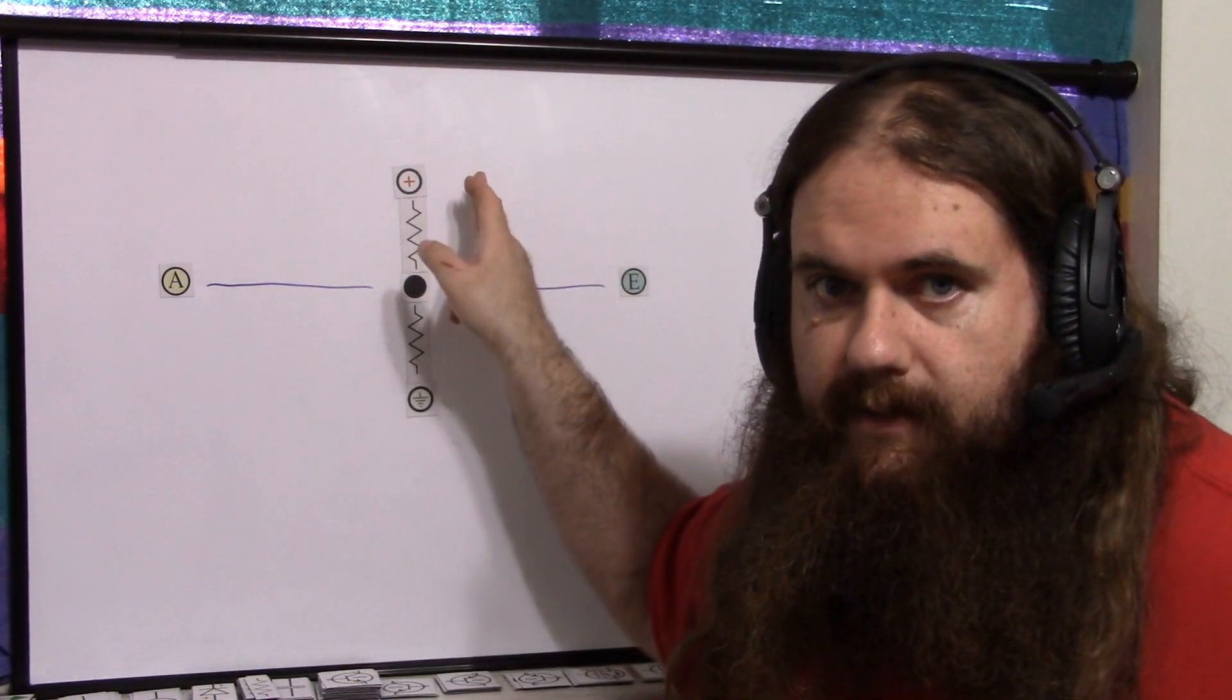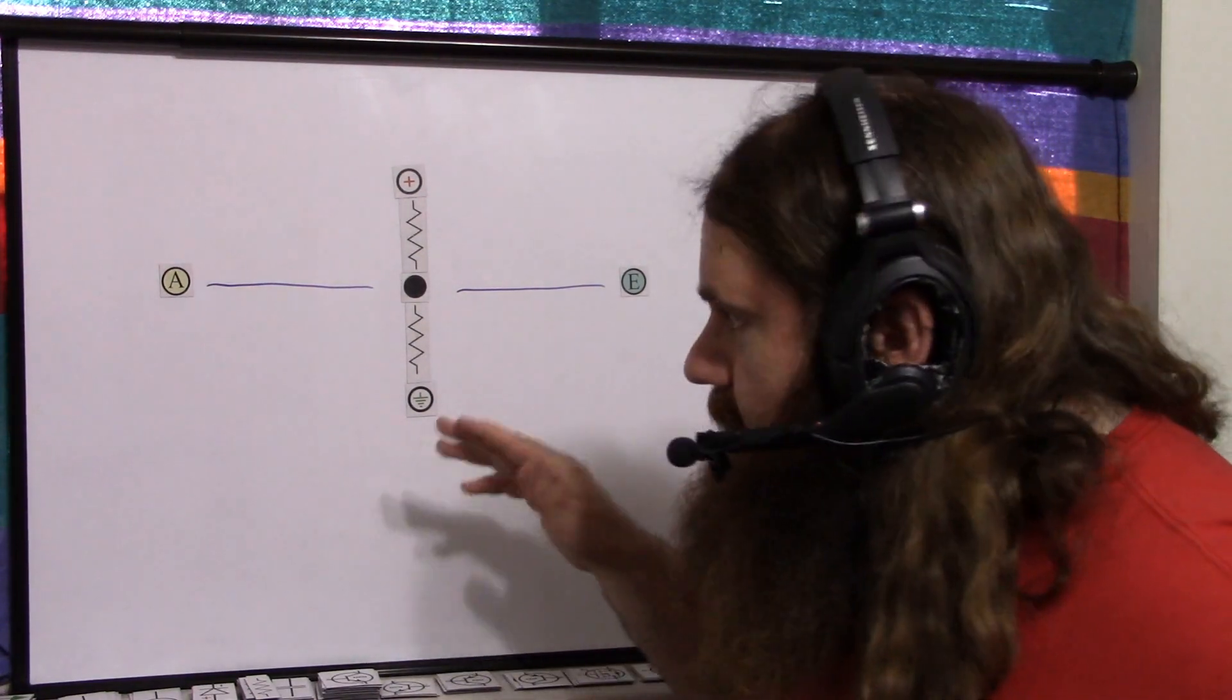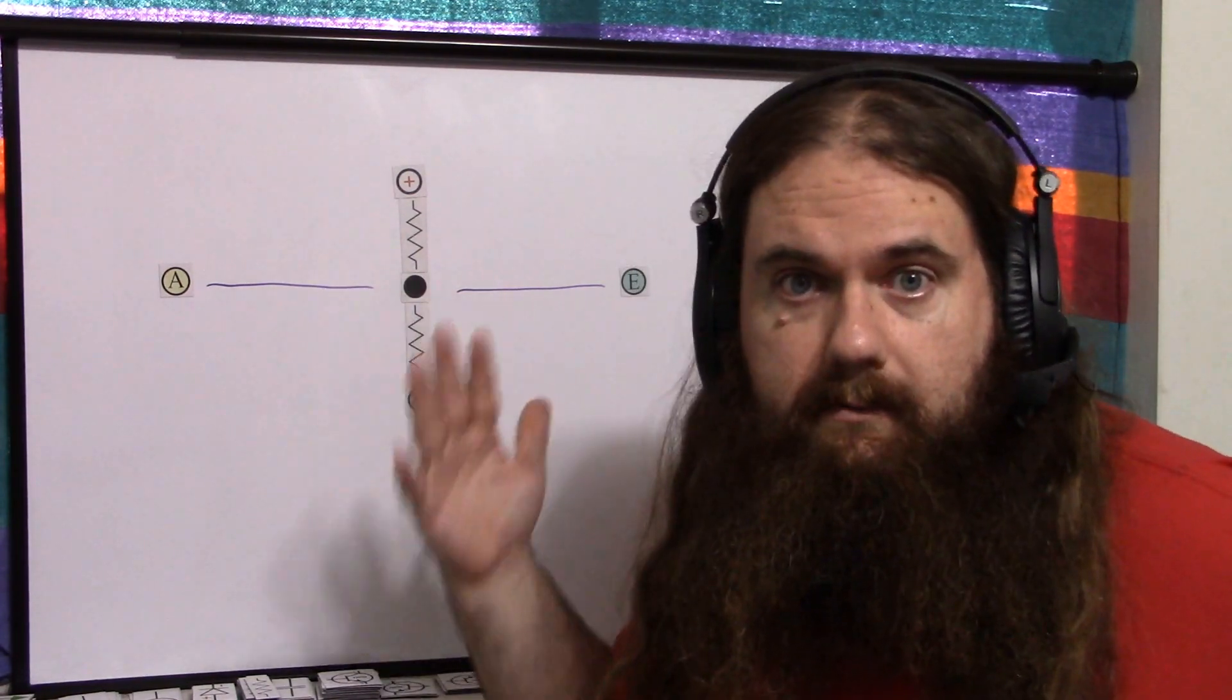And you say if it's close to the full voltage, then it's high. If it's close to the zero voltage, it's low, and if it's close to the middle, then it's floating. That'll work. Boom. Done.